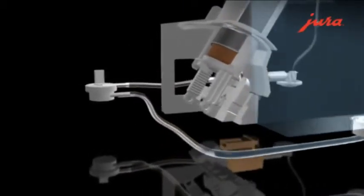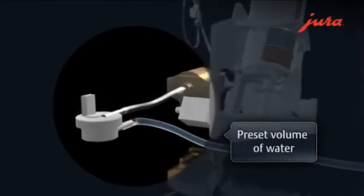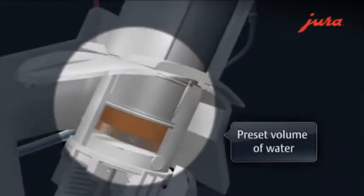The secret of perfect pre-brewing is to wet the coffee powder evenly. The intelligent electronic control system detects all the individually programmed settings and automatically adjusts the amount of pre-brewing water accordingly.